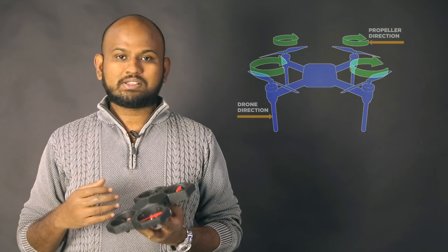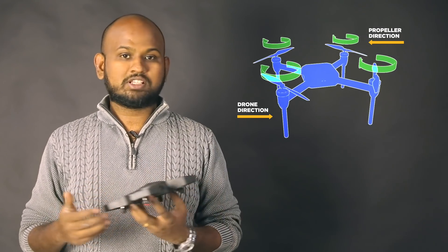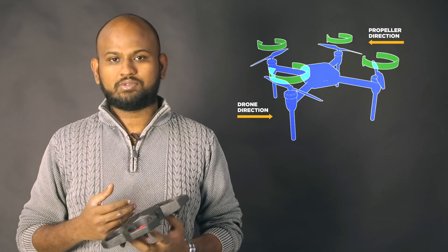Why not attach all the propellers in the same direction? The reason is Newton's third law. If we attach all the propellers in the same direction, the drone will start to rotate in the opposite direction. This is because of the force exerted by the rotors on the drone frame. That is, if you attach the propeller in the clockwise direction, then the drone will start rotating in the anticlockwise direction.